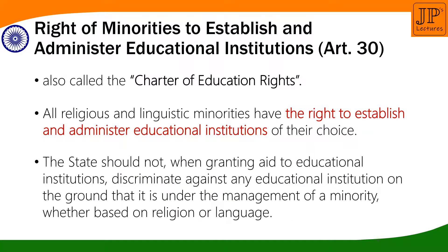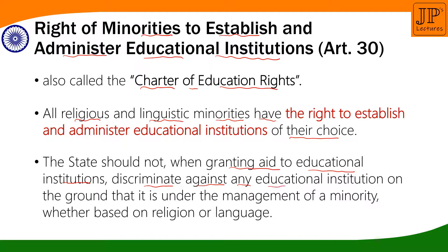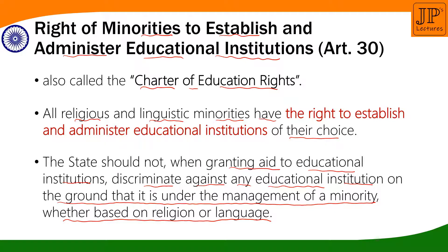Article 30 deals with the right of minorities to establish and administer educational institutions. It is also known as the charter of education rights. All religious and linguistic minorities have the right to establish and administer educational institutions of their choice. The state, when granting aid to educational institutions, should not discriminate against any institution on the grounds that it is under the management of minorities, whether based on religion or language.